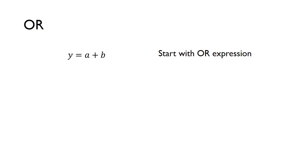So for OR, we just start with our normal OR expression, A or B. And again, we can apply double inversion. Applying double inversion is a very useful trick - it doesn't change the expression anyway, but it gives you something that you can apply De Morgan's theorems to.